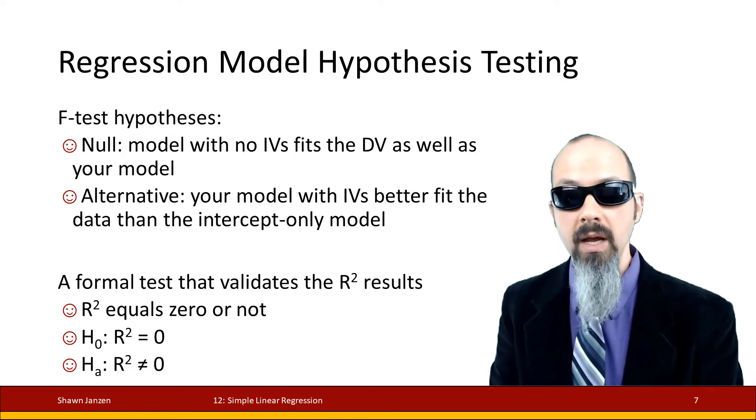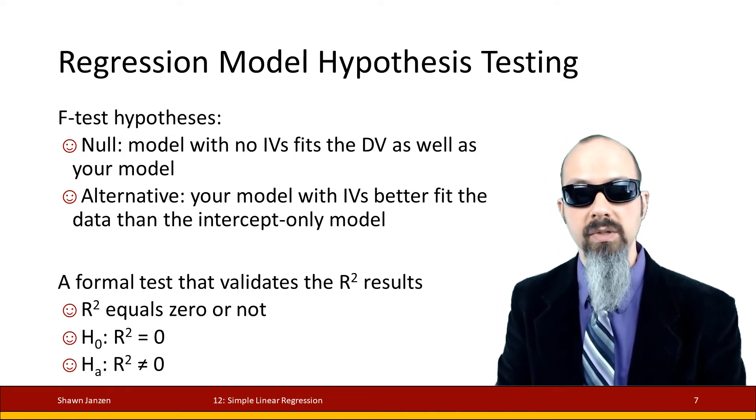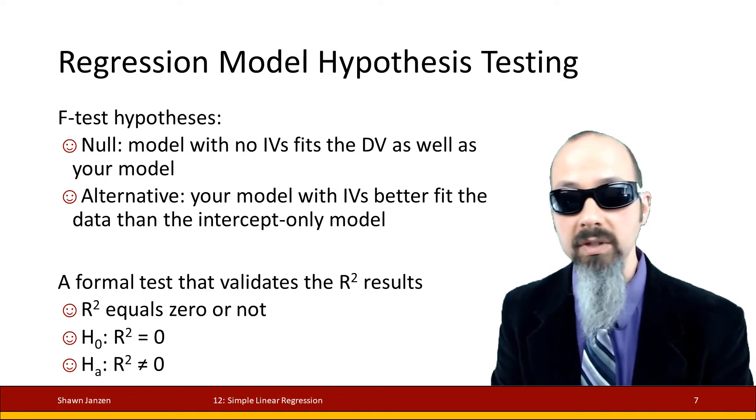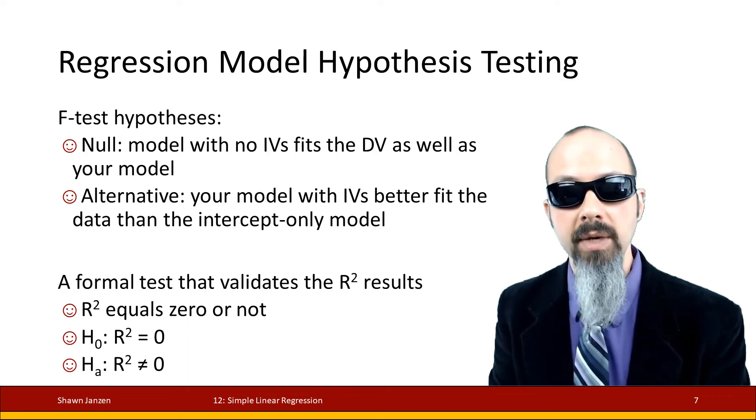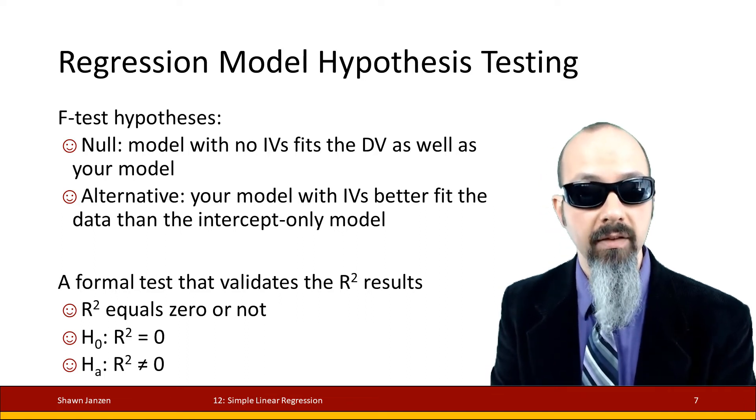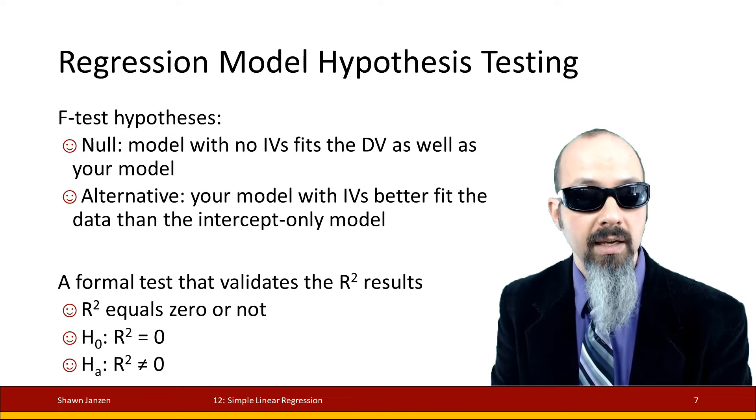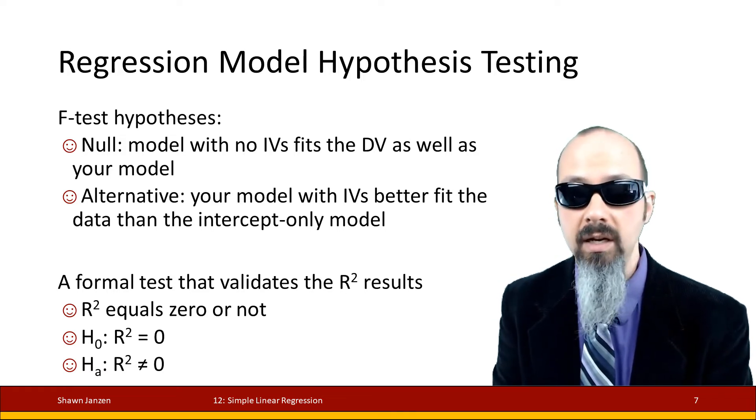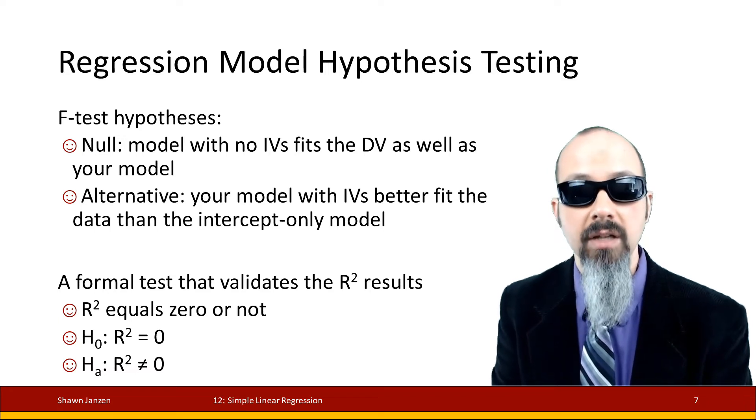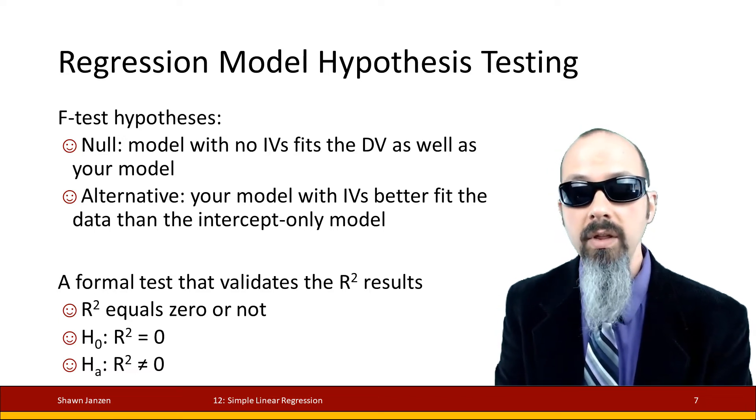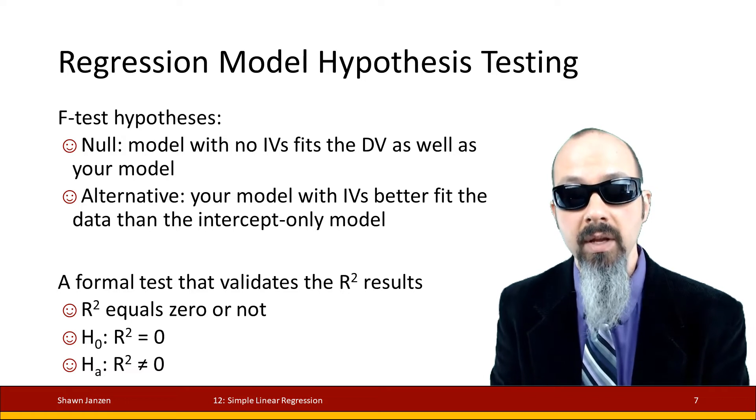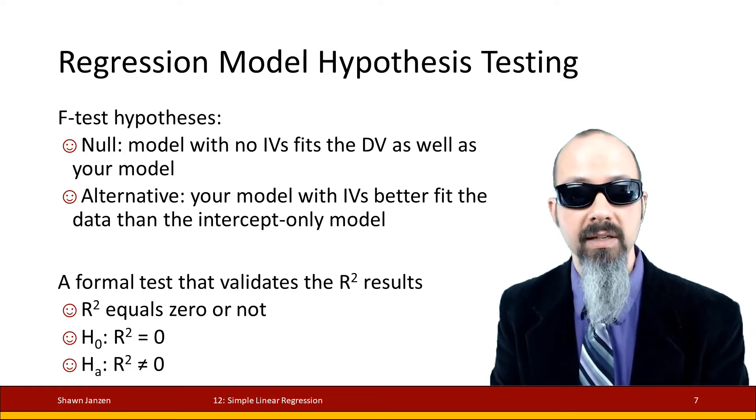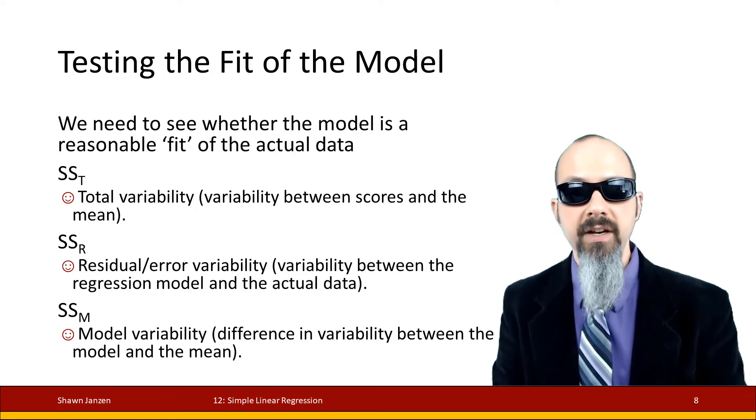That F-score is tied to the R², and the R² is going to validate these results. It's saying if the R² is equal to zero or not. The null says the R² is equal to zero—R² is zero means it's not predicting any of the variance in your model, so your independent variables aren't doing any work. The alternative: R² is not zero—you've got good friends doing some work and helping you along in your processes.